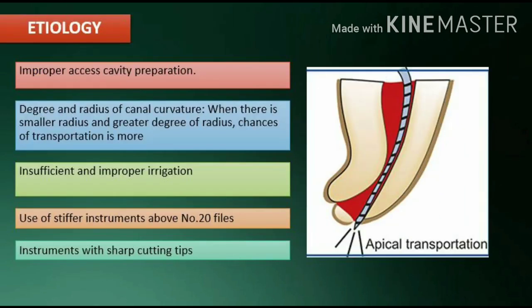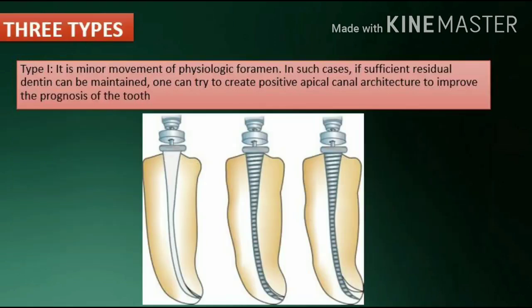Etiology of apical canal transportation includes improper access cavity preparation, degree and radius of canal curvature — when there is a smaller radius and greater degree of curvature, chances of transportation are more — insufficient and improper irrigation, use of stiffer instruments above number 20 files, and instruments with sharp cutting tips. Apical transportation can be categorized into three types.